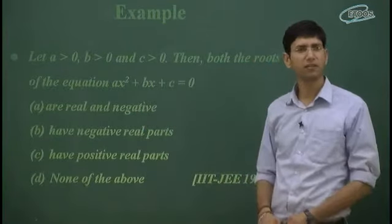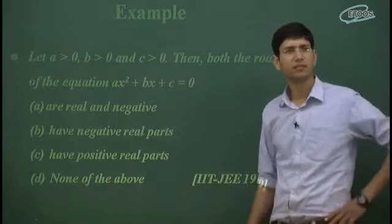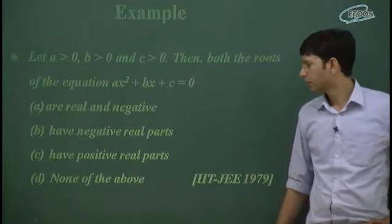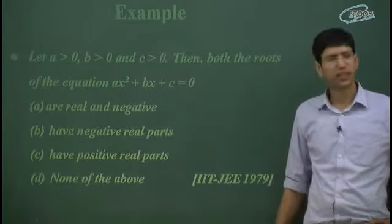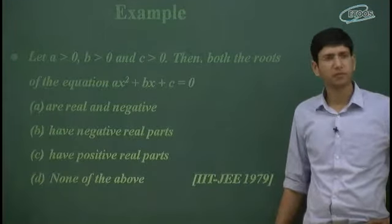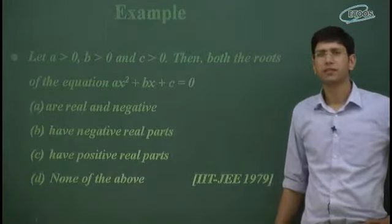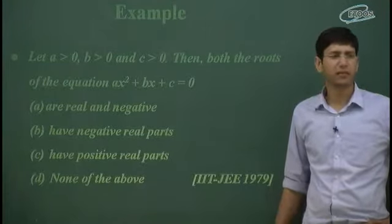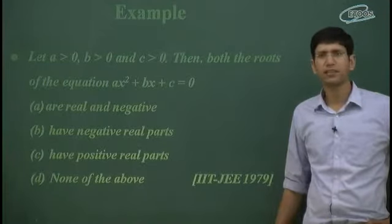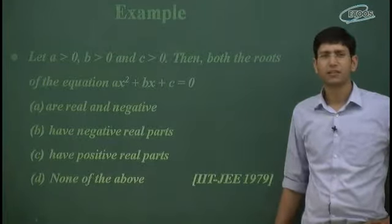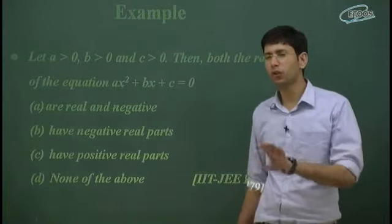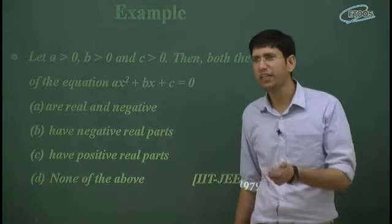C is positive. So D — none of the above. D is wrong. B is wrong. A or D is wrong. D is wrong.